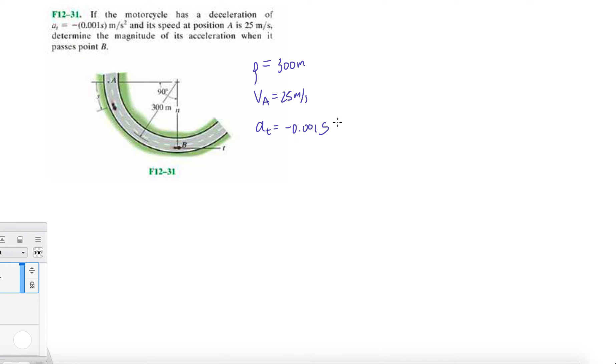This is key: whenever they give you an acceleration or velocity with respect to some spatial coordinate, we should be thinking chain rule. Before the chain rule, let's find what the tangential acceleration is at point B. To do that, we need to know what s is at point B.